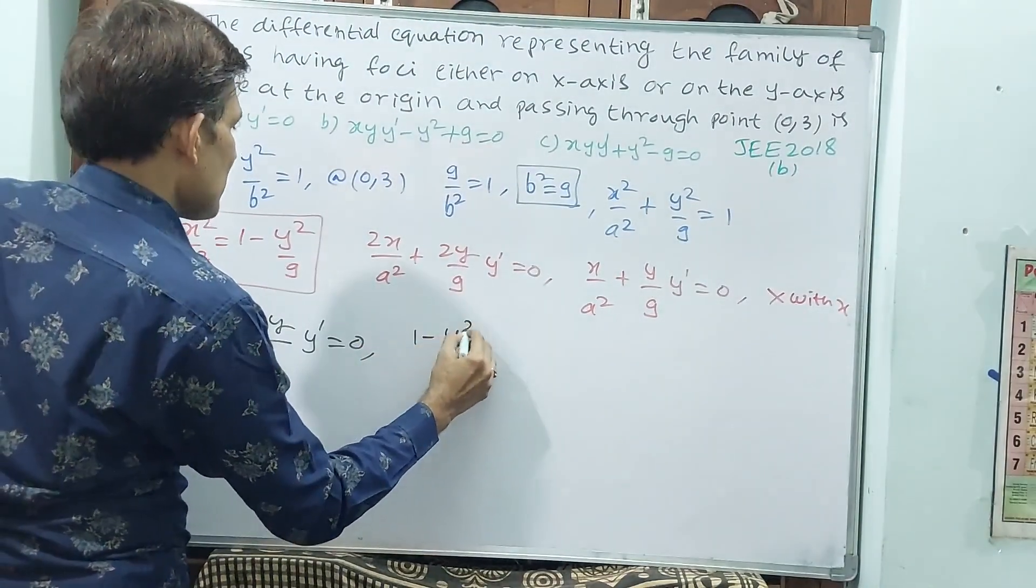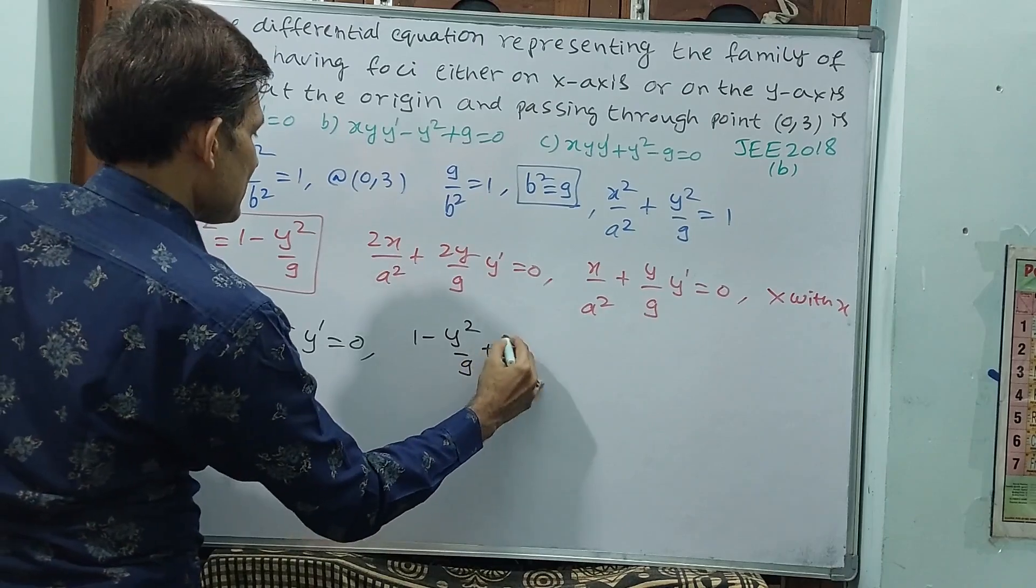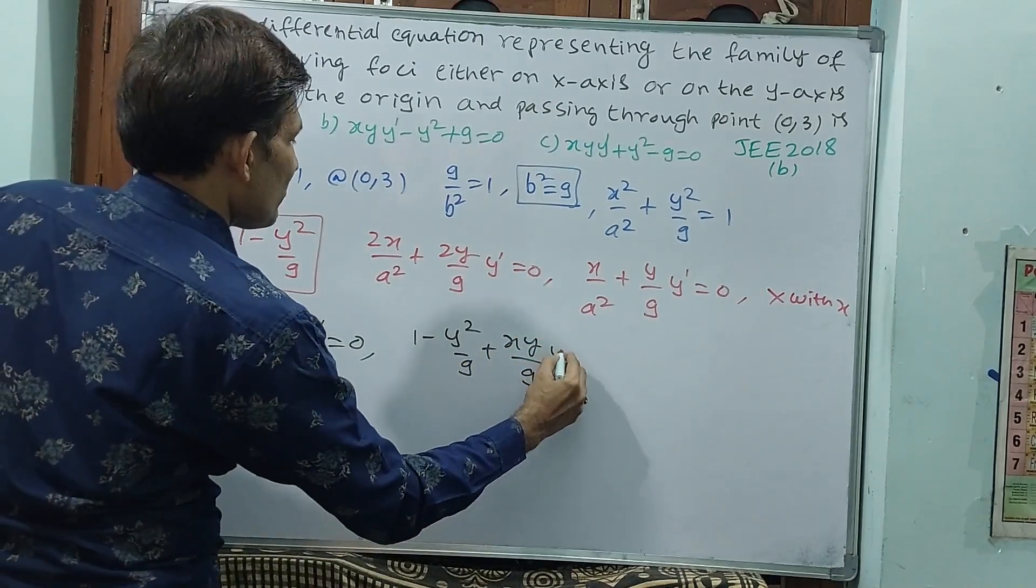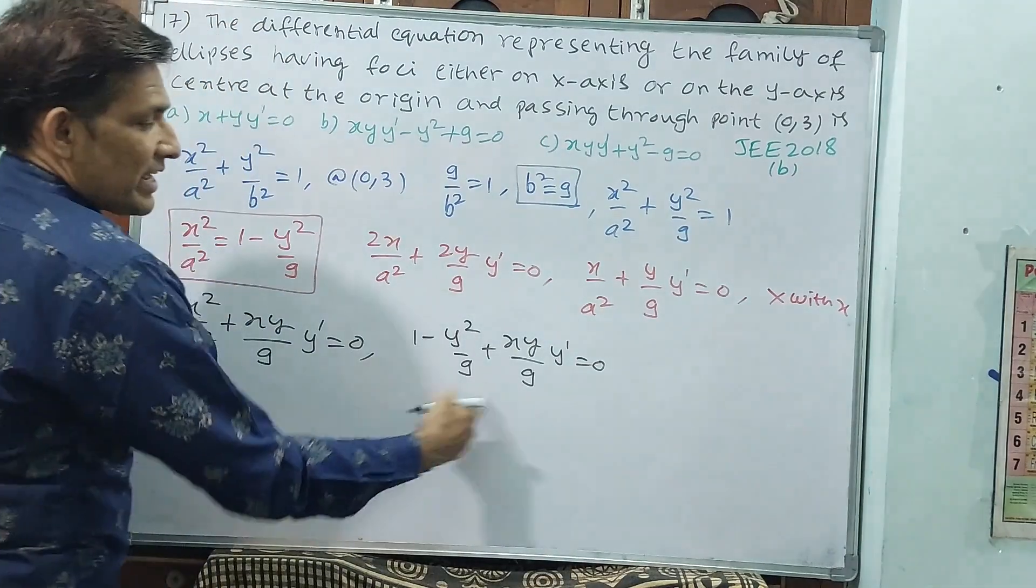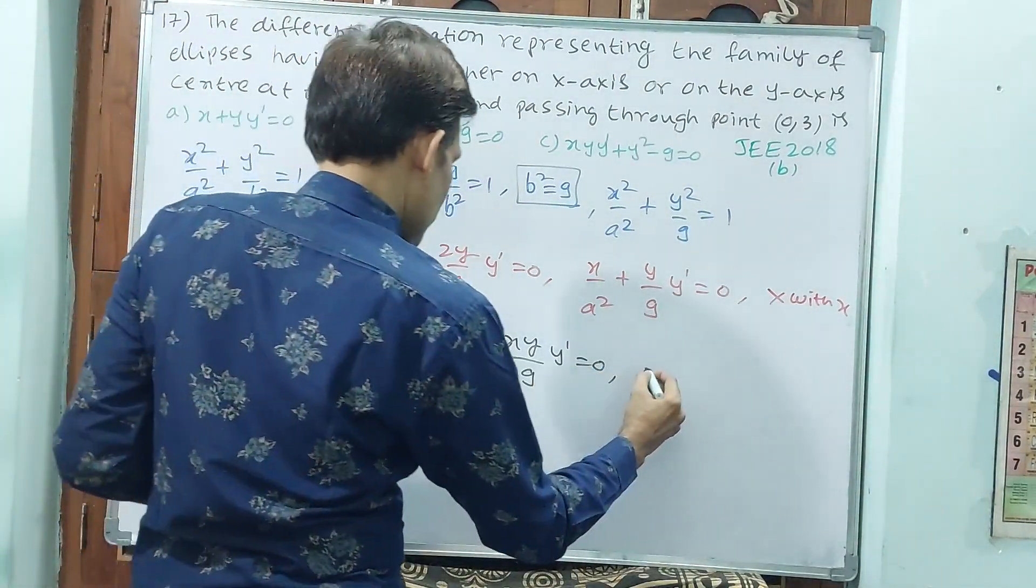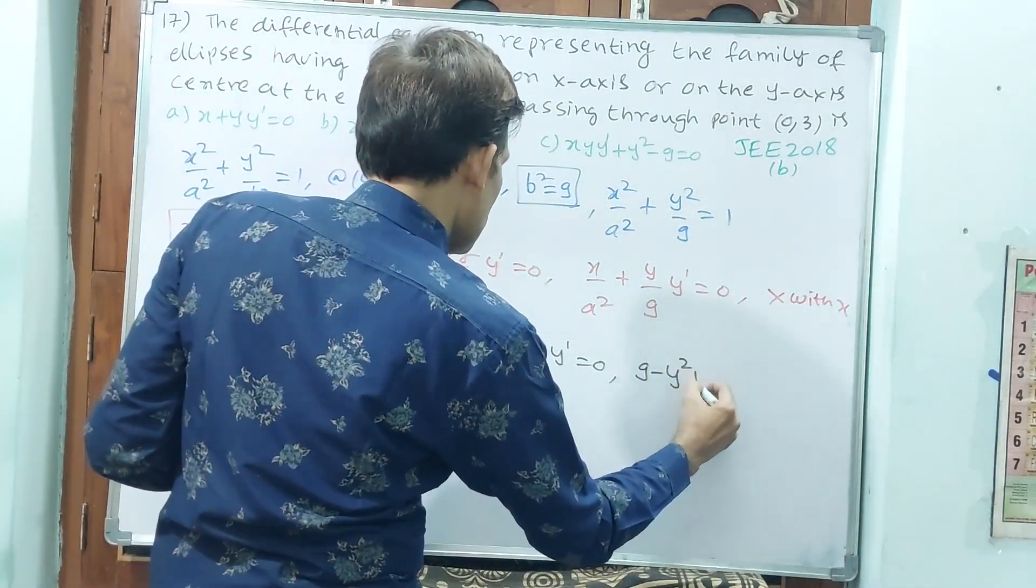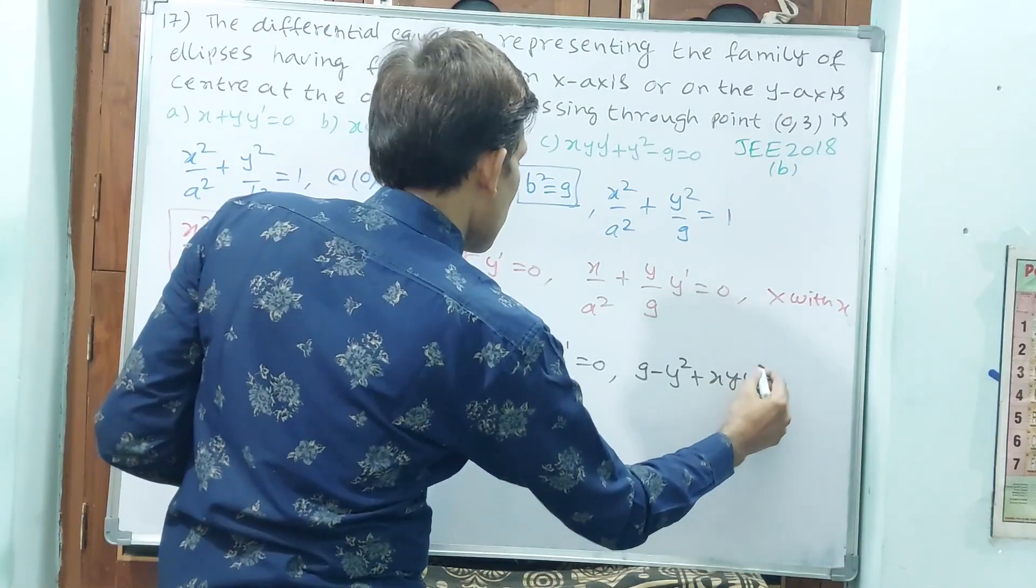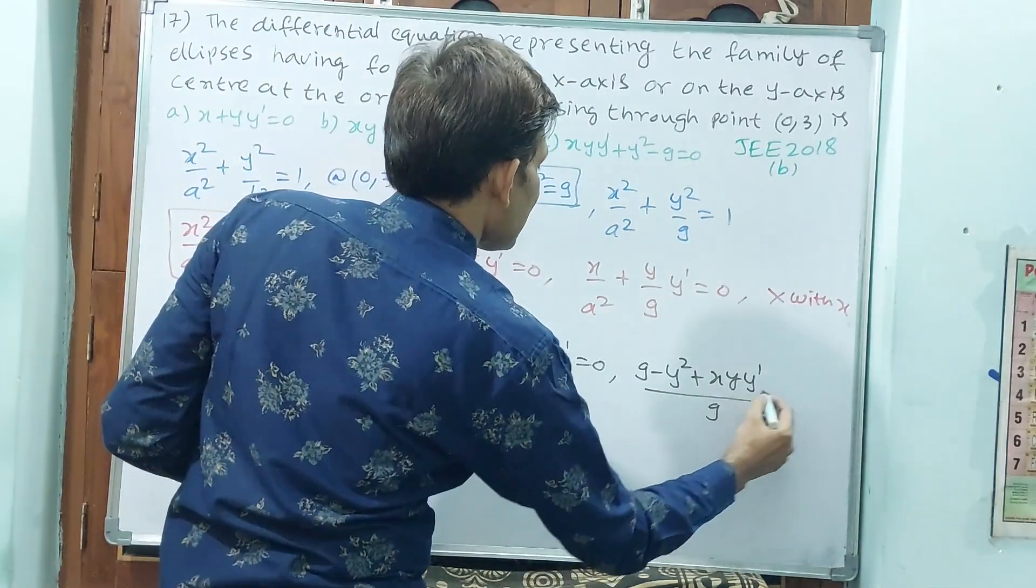Replace this x square by a square. 1 minus y square by 9 plus xy by 9 into y-dash is equal to 0. Take LCM. 9 minus y square plus xy y-dash divided by 9 is equal to 0.